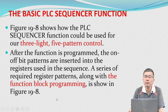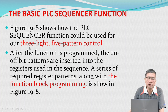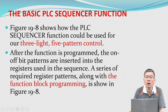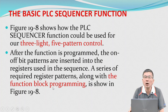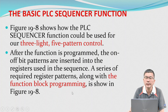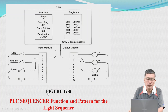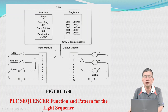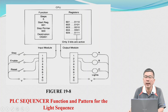Figure 19.8 shows how the PLC sequence function could be used for the three-light five-pattern control. After the function is programmed, the on-off bit patterns are inserted into the registers used in the sequence. A series of required register patterns along with the function block programming is shown in figure 19.8. This picture shows the PLC sequence of function and the patterns for the light sequence.